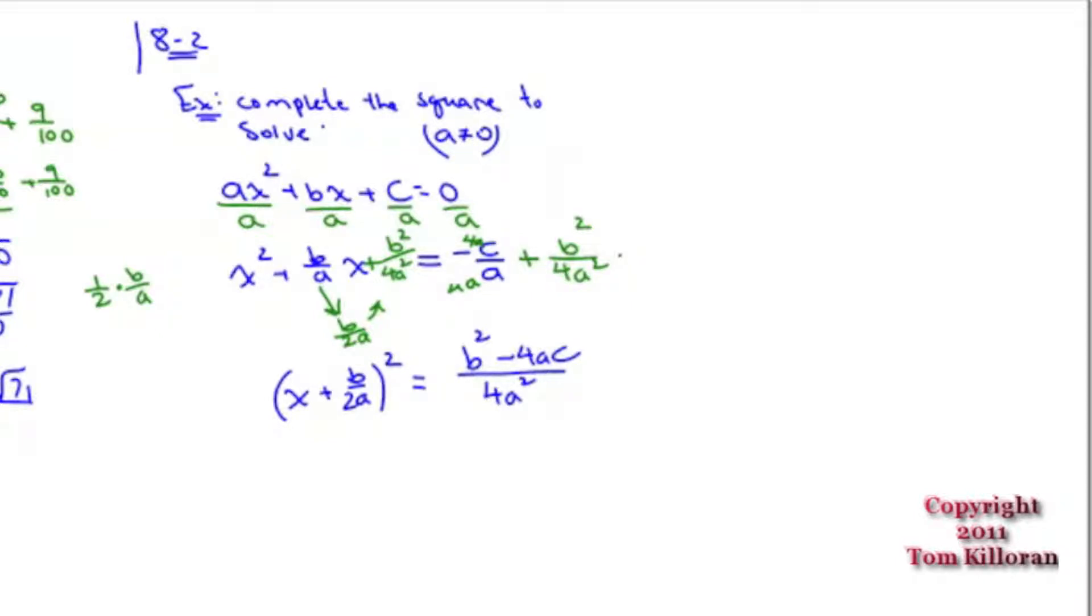What do you do to both sides? Square root of both sides. The left-hand side becomes X plus B over 2A is equal to plus or minus. No, there's no i. B squared minus 4AC, you don't know if it's positive or negative, so just leave it alone. So it would be the square root of B squared minus 4AC over 2A. Starting to look familiar?